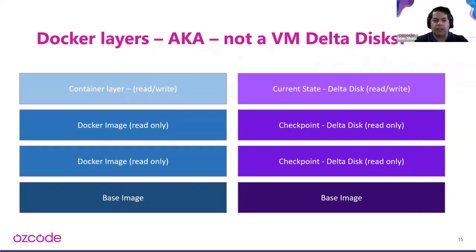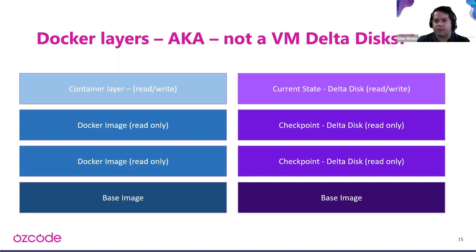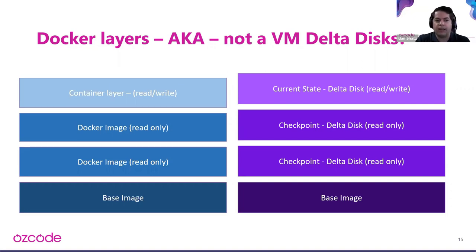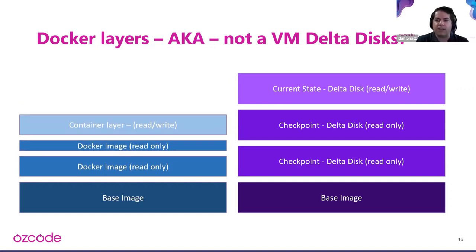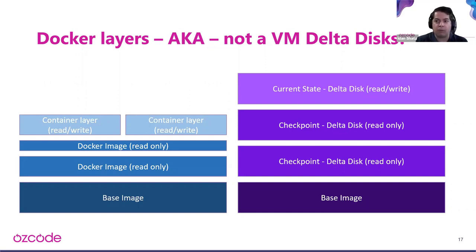Docker uses the host OS for all features, so instead of storing big disk images it only saves the changed files. If you run two Docker containers, the shared base layers don't need to be duplicated — they use the same memory on the host OS. Only the modifications or memory of each internal container need to be separated and virtualized, which again increases density.